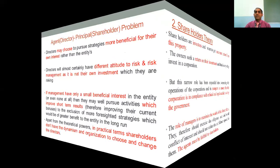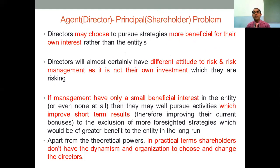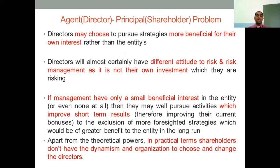To summarize Agency Theory: it speaks about two important words — the director or agent, and the principal or shareholder. The director has the right to choose strategies more beneficial for their own interests; they have the power to choose how to merge, acquire, and manage the business. If the attitude of the director is not okay, there will be a problem in managing. Agency Theory explains how to balance the director and shareholder relationship.